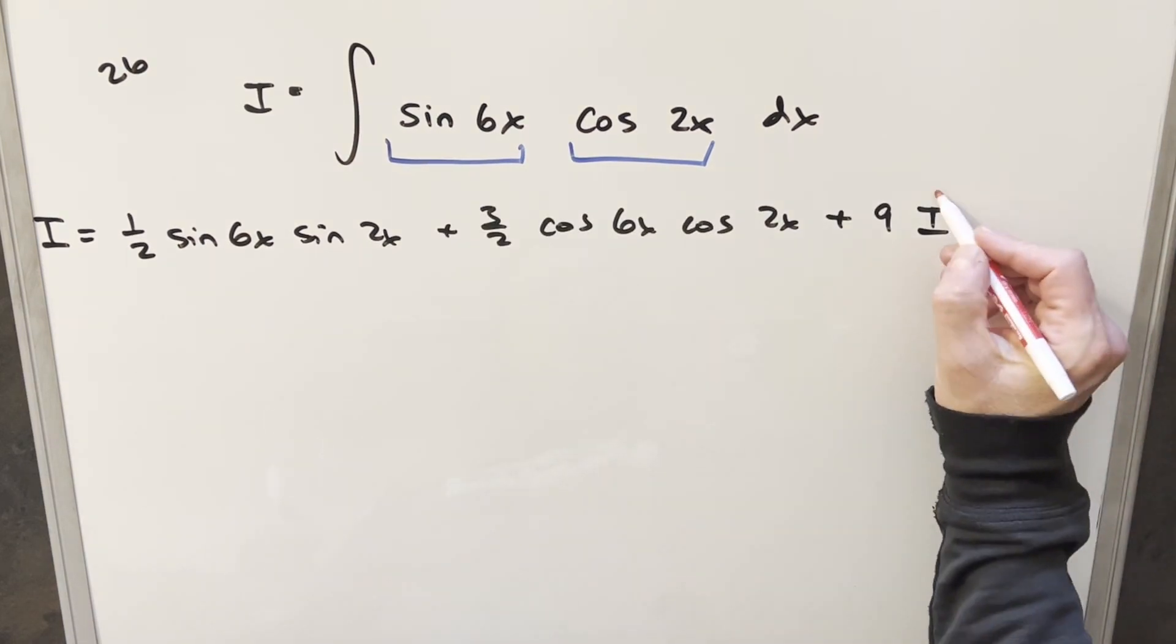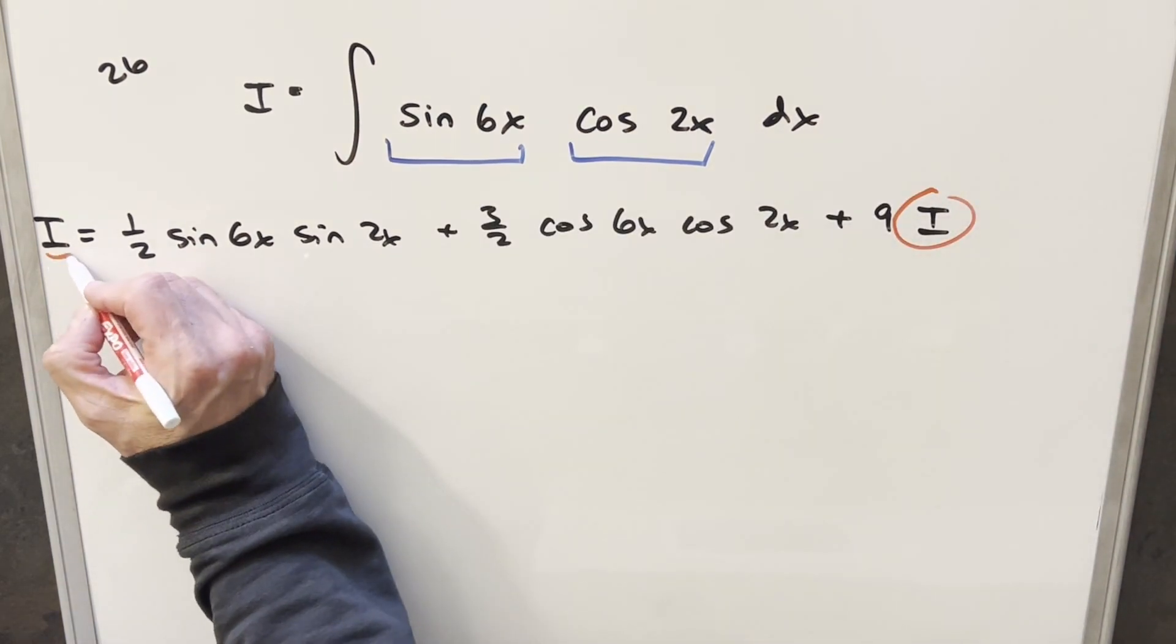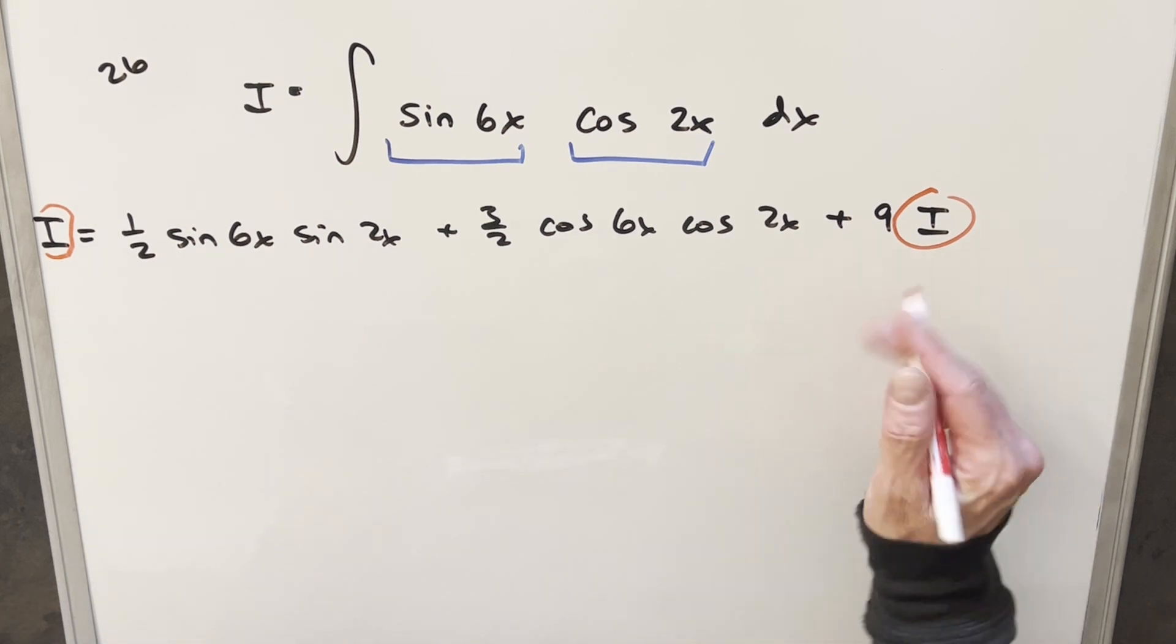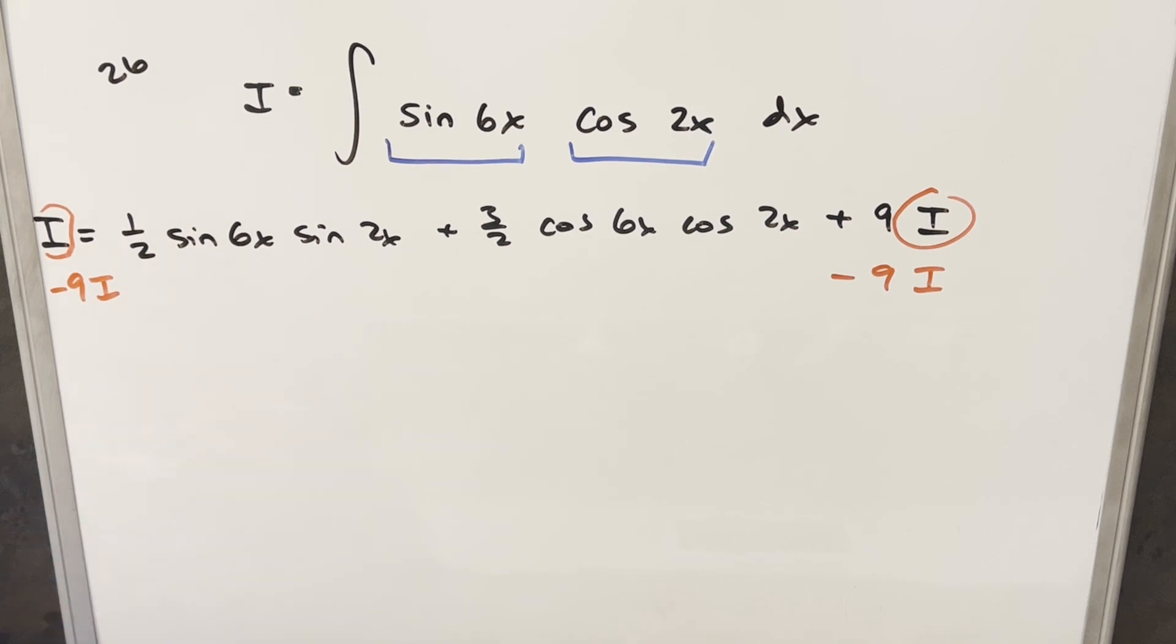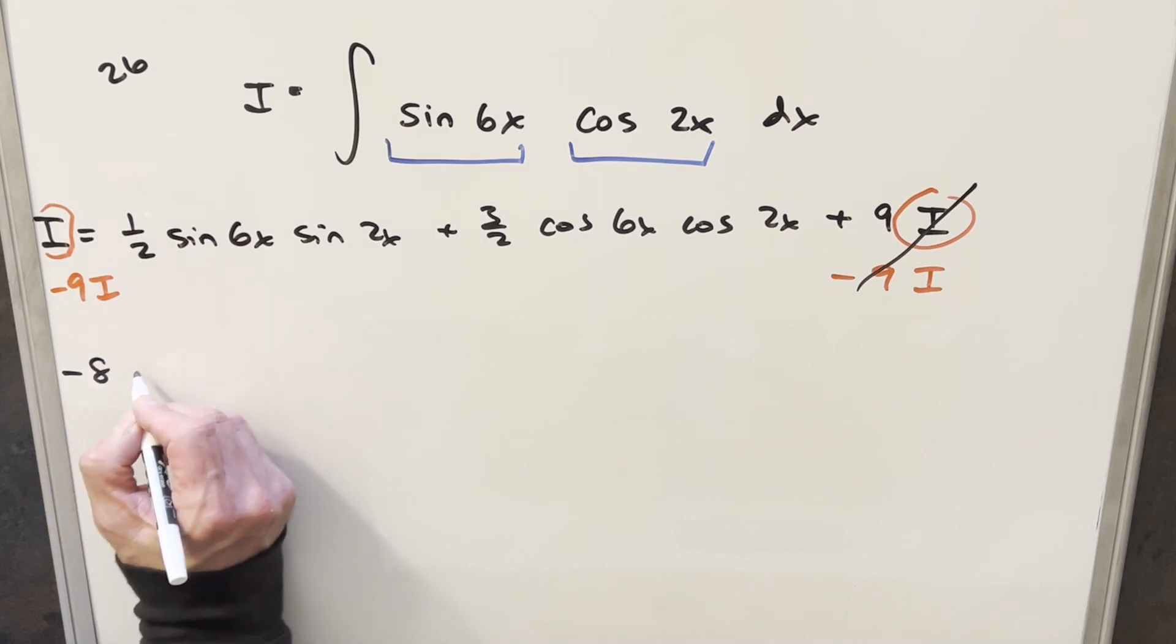Okay, now next what we're trying to do, we want to solve for I, but we've got I on both sides of the equation. So what I'm going to do is let's just subtract 9I here, and we'll subtract 9I here. So doing that, this is going to cancel here. Over here, I minus 9I is going to give me minus 8I.